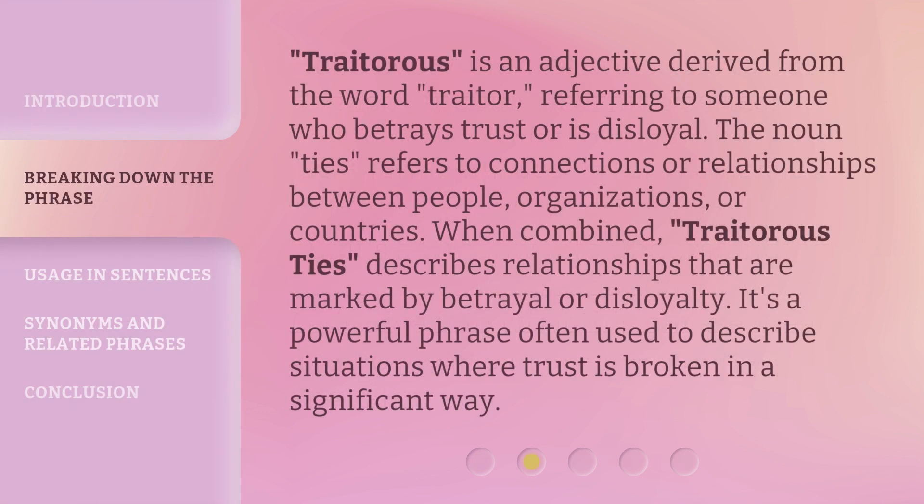Traitorous is an adjective derived from the word traitor, referring to someone who betrays trust or is disloyal. The noun ties refers to connections or relationships between people, organizations, or countries. When combined, Traitorous Ties describes relationships that are marked by betrayal or disloyalty. It's a powerful phrase often used to describe situations where trust is broken in a significant way.